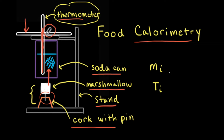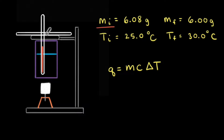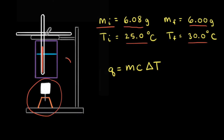When we find that maximum temperature, we can record it as the final temperature. Once the marshmallow with the cork and pin cools down, we can find a final mass. Let's say the initial mass of our marshmallow-pin-cork was 6.08 grams and the final mass was 6.00 grams. The initial temperature of the water was 25.0 degrees Celsius and the final temperature was 30.0 degrees Celsius. We also started with 50.0 grams of water in the soda can.